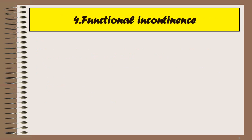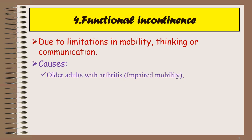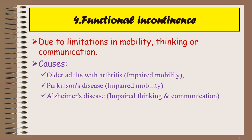Functional incontinence is a type of incontinence occurring due to limitations in mobility, thinking, or communication. The causes include older adults with arthritis, Parkinson's disease, and Alzheimer's disease.